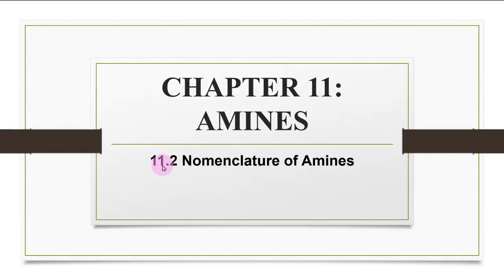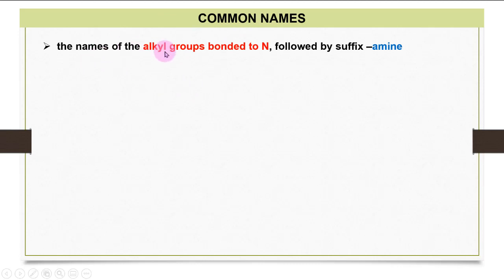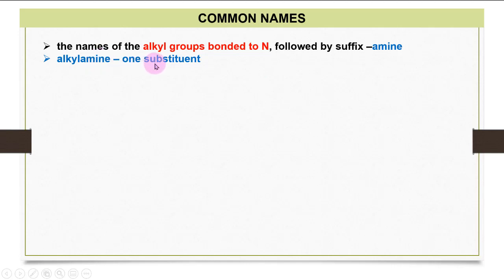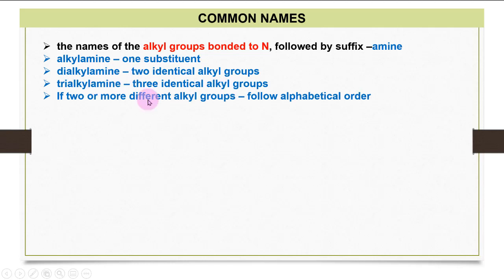Let's look at section 11.2, nomenclature of amines. For common names, we use the names of alkyl groups bonded to nitrogen followed by the suffix '-amine'. One alkyl group gives alkylamine, two identical groups gives dialkylamine, and three identical groups gives trialkylamine. If you have two or more different alkyl groups, you arrange them in alphabetical order.